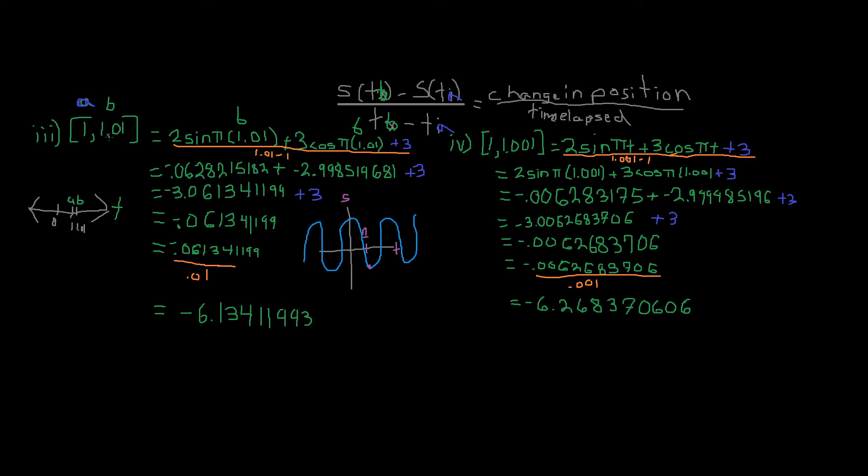So we have a function. And we simply just plug in our variables, a and b. So we plug them in, we do our calculation, and then we get negative six point one three four one one nine nine nine three. We do the same thing over here. For one comma one point zero zero one for the time variable. This would be a, remember? And this would be b. We plug it all in. Remember, we already solved for this portion of the function. So I just put it right here because we already solved for it, why do it again. And we end up getting a number over here.